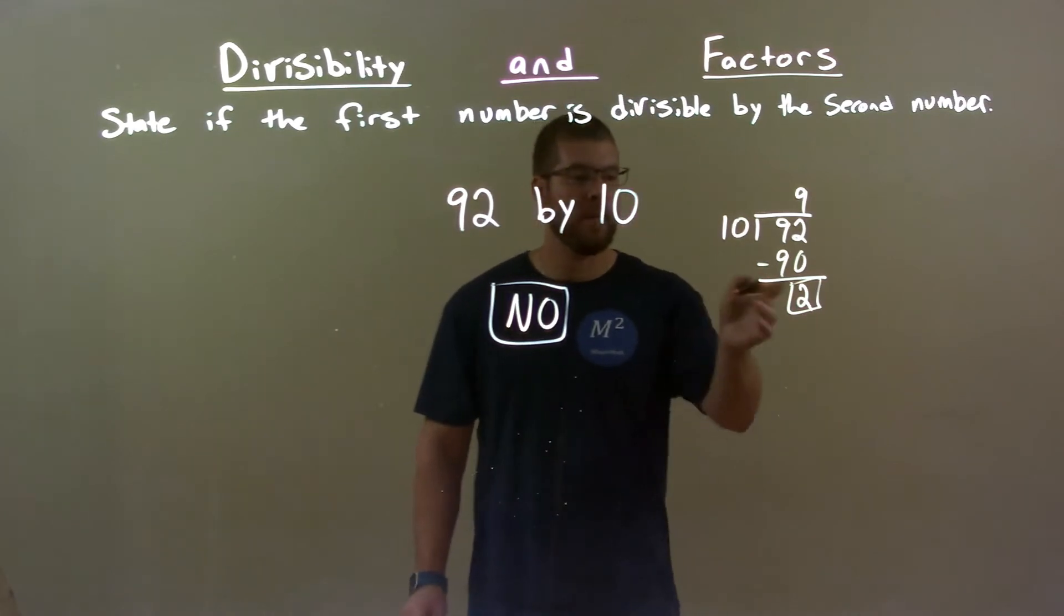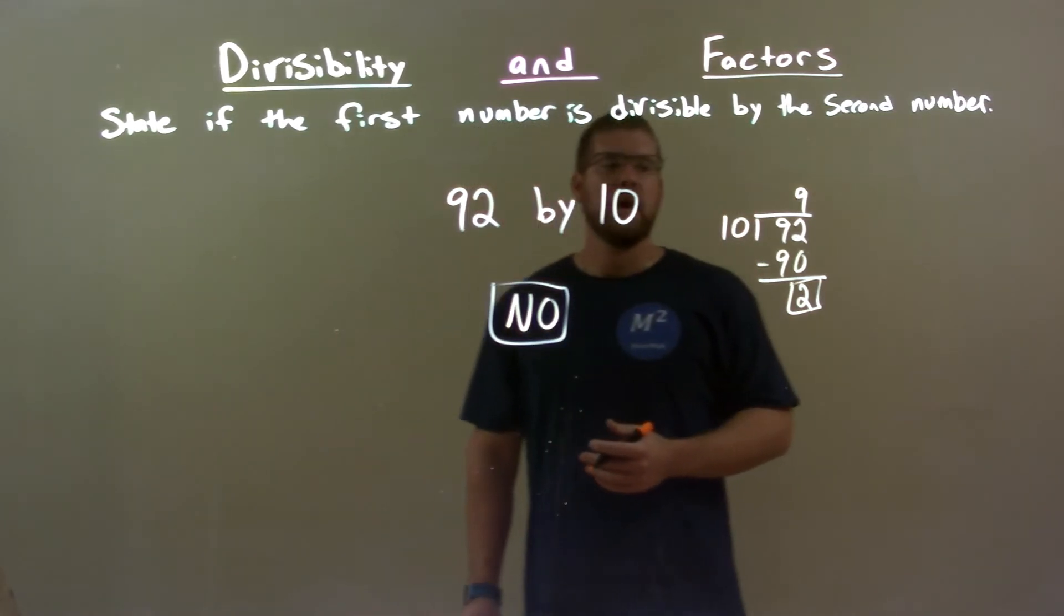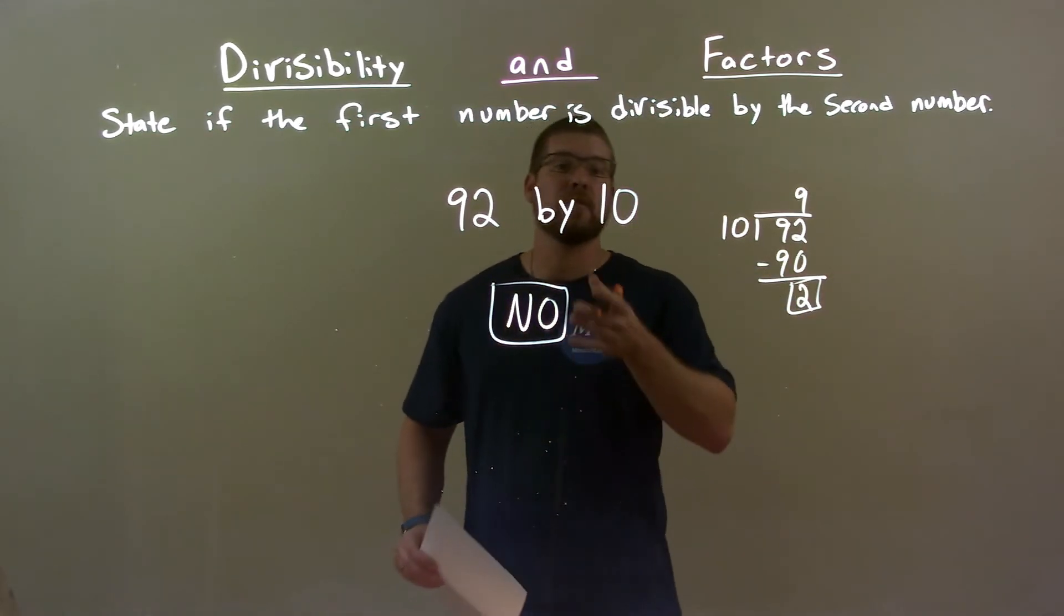Since we have a remainder, we know 10 does not go in evenly to 92. And so, again, the final answer is no.